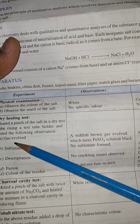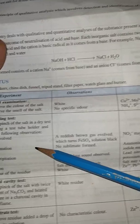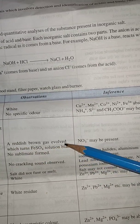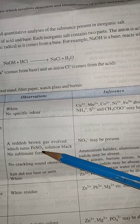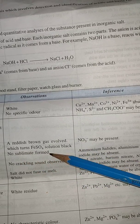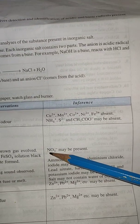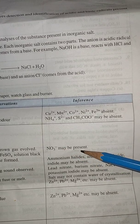First observation on the basis of gas evolved: a reddish brown gas evolved which turns FeSO4 solution black. No sublimate formed, it means NO3 minus may be present.